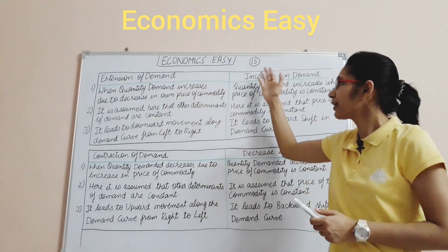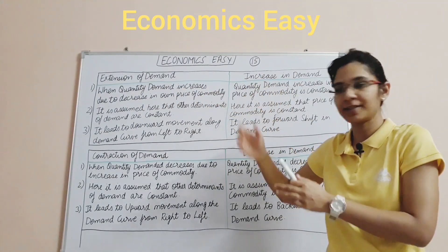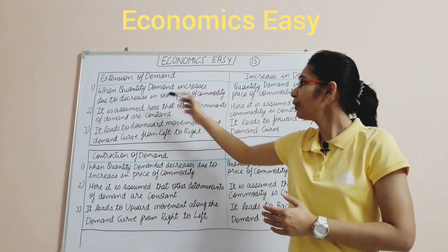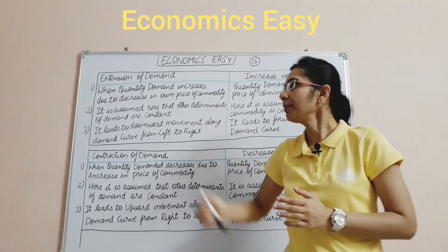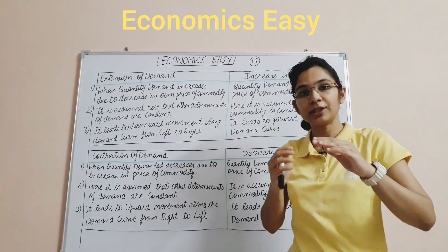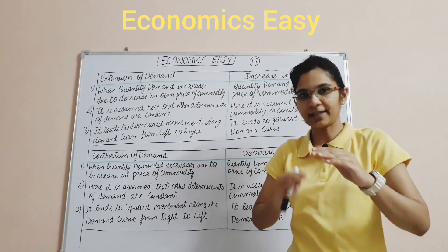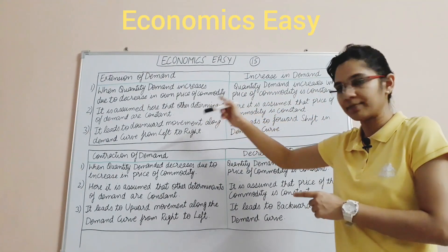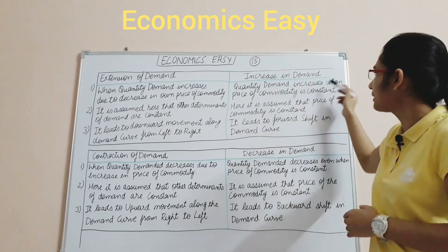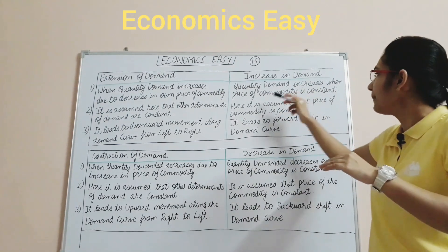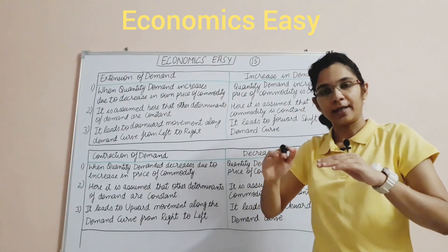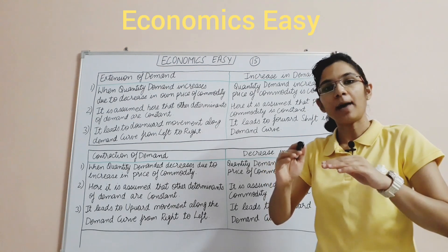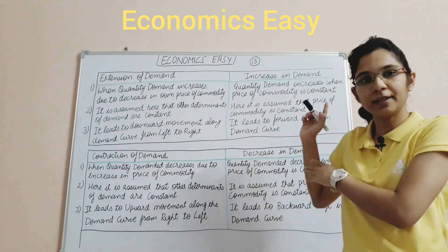Let's see what is the extension of demand and an increase in demand. Extension of demand means quantity demanded increases when that commodity's own price decreases — that is called extension of demand. Increase in demand is when quantity demanded increases even when the price of the commodity is constant. For example, the price is still 100 rupees, but quantity demanded has increased — that is the increase in demand.